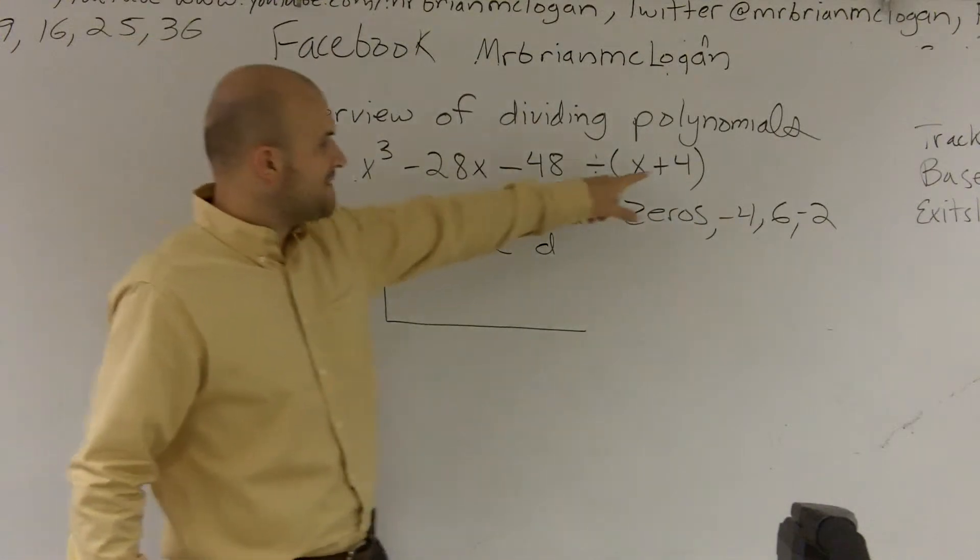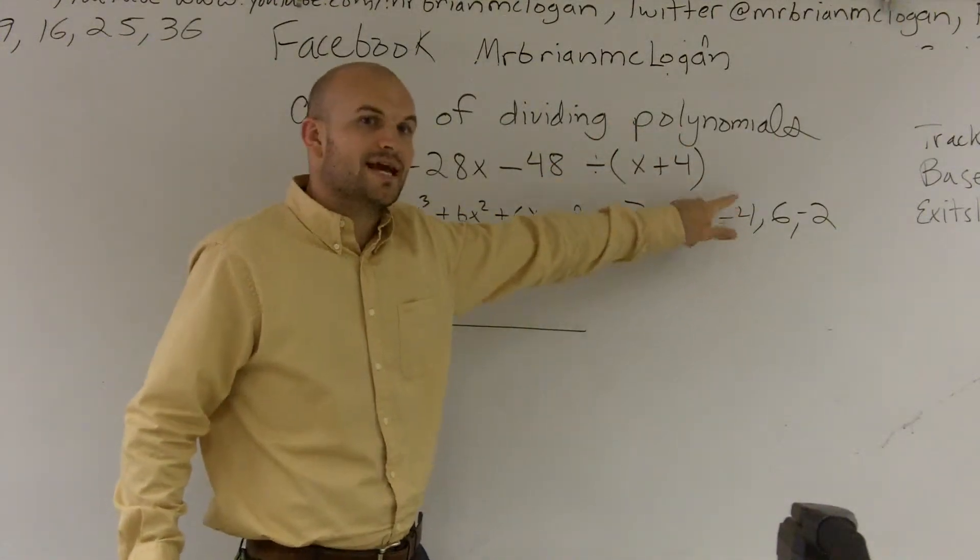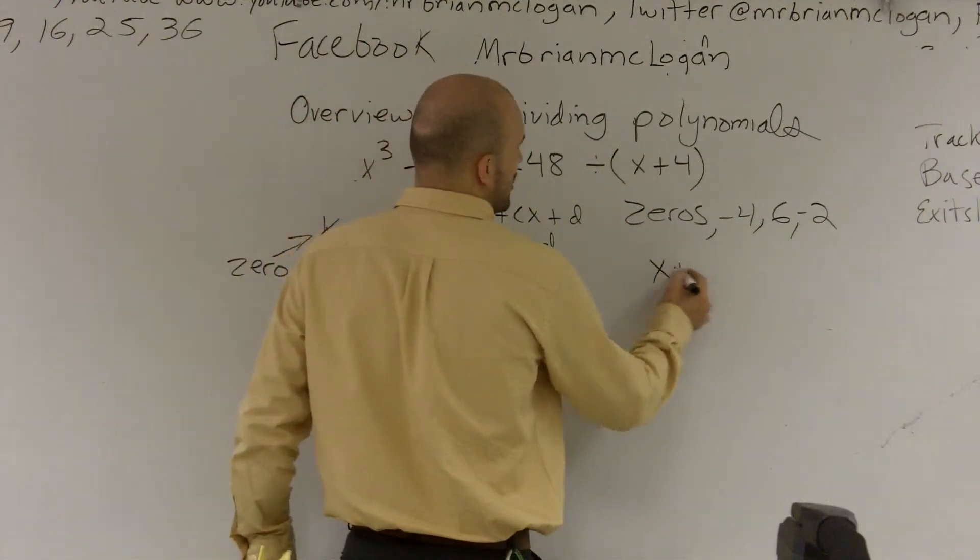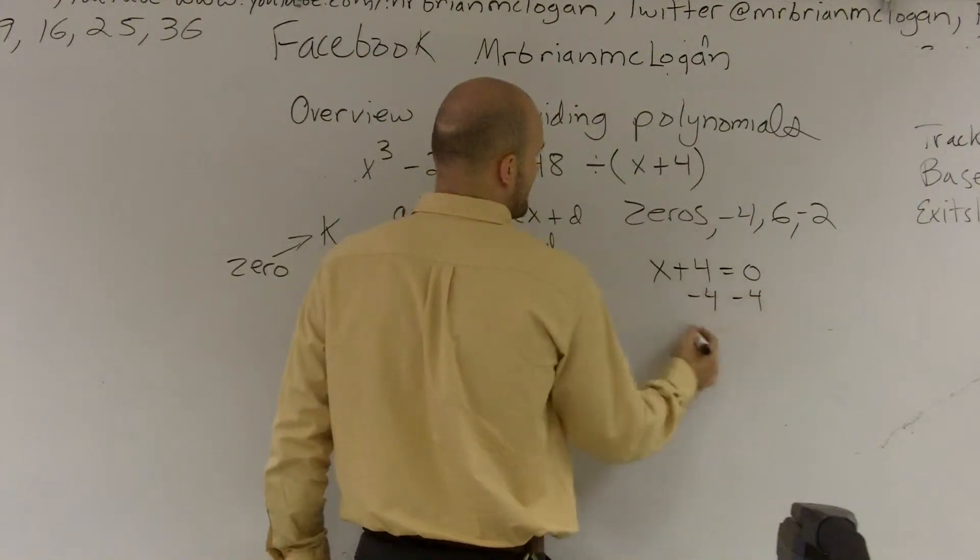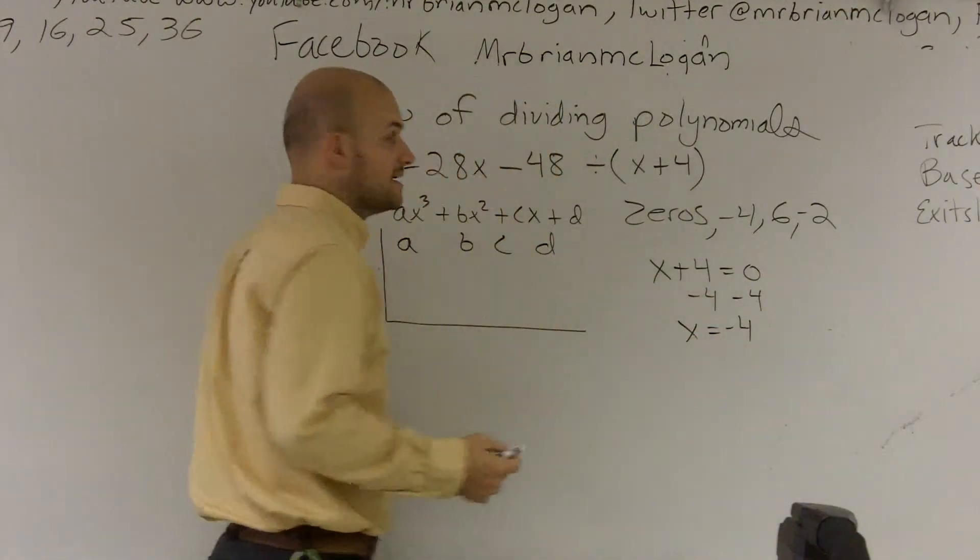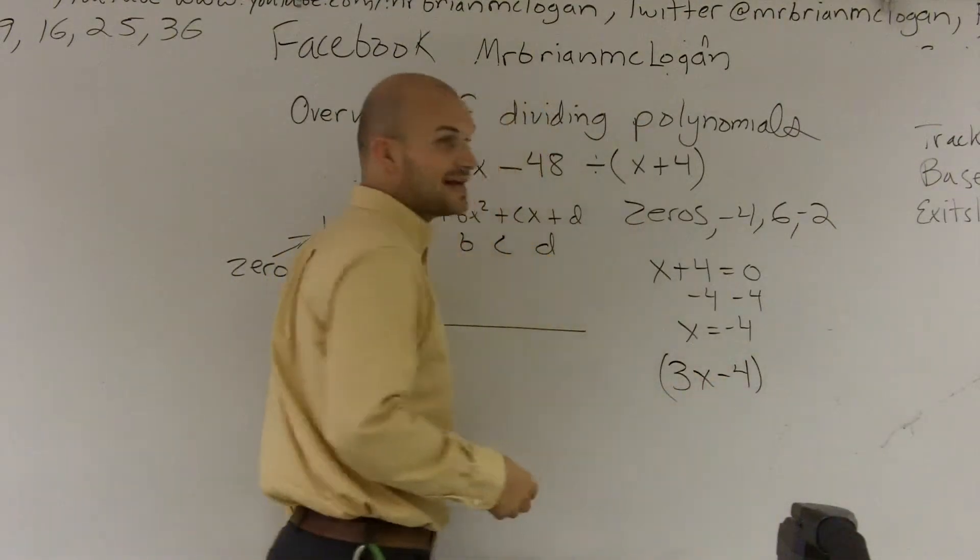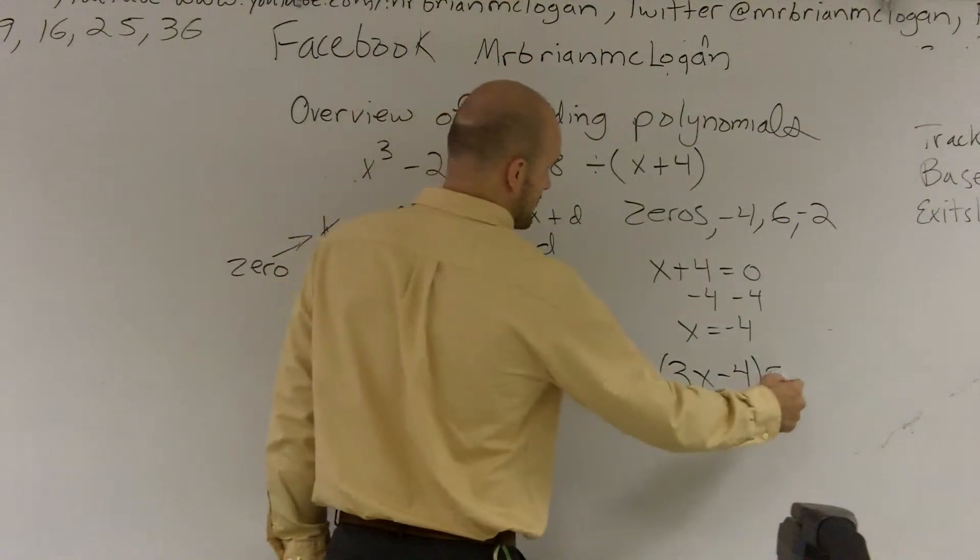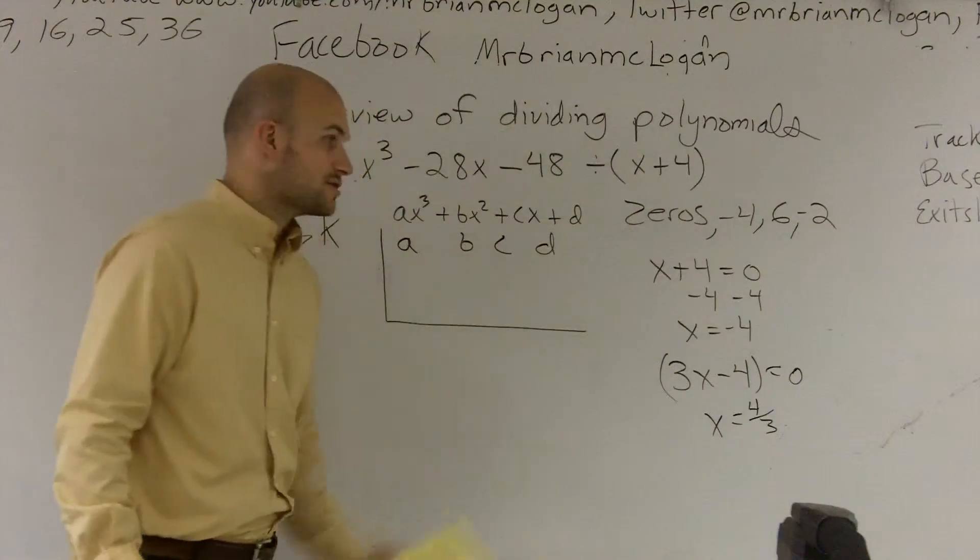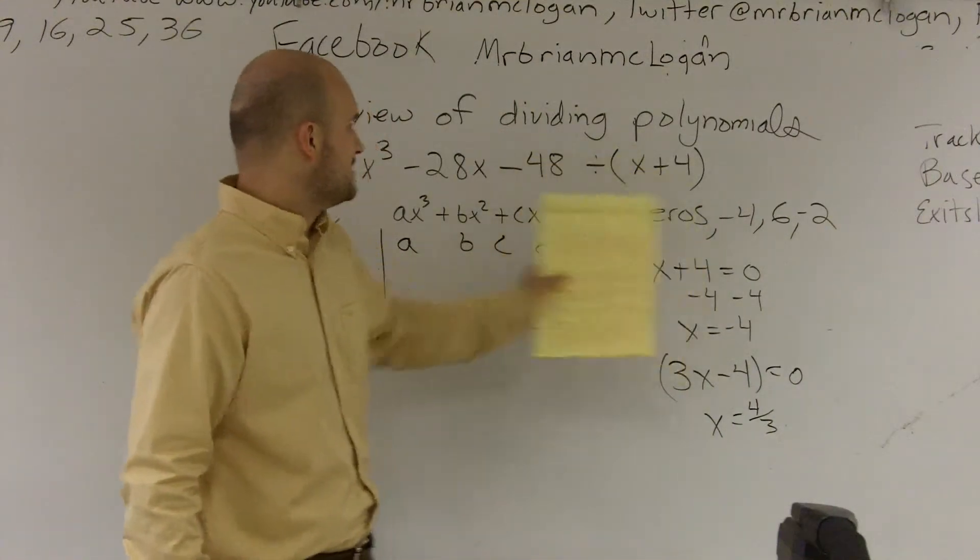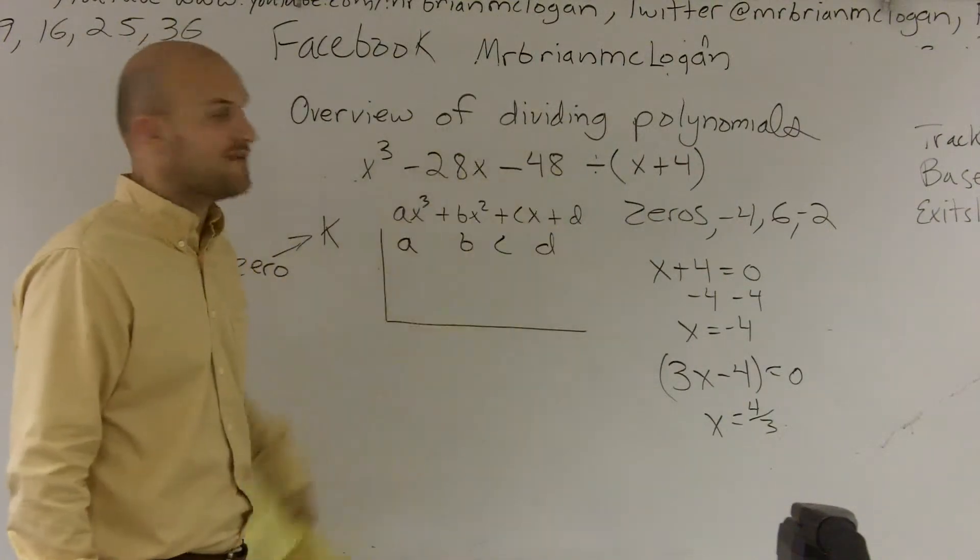K is going to be your zero. So if my factor is x plus 4, I know my zero is going to be negative 4. And if you just want to set it up, if you don't know, just take x plus 4, set it equal to 0, and figure out what your zero is. And this becomes very important when you have something like this. When that's your factor, your zero is going to be 4 thirds. So it's very important for you to understand when you're doing synthetic division to represent it as a zero and not as a factor.